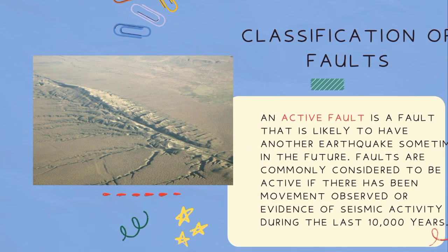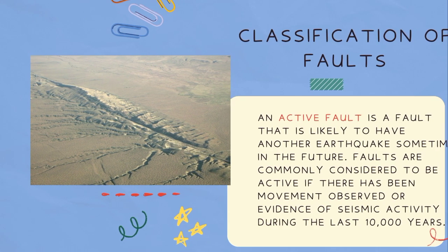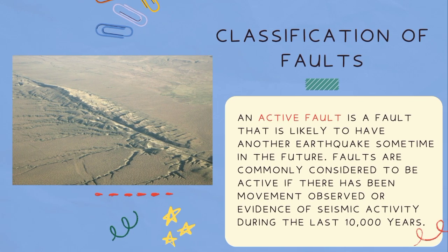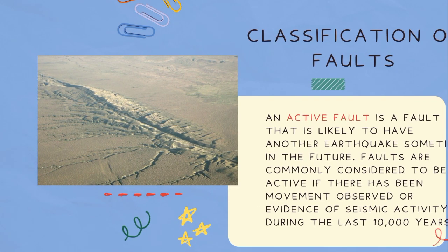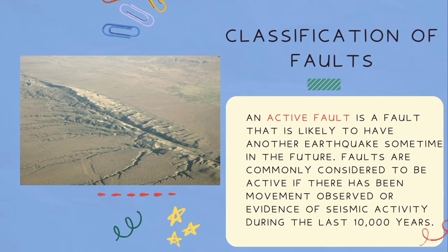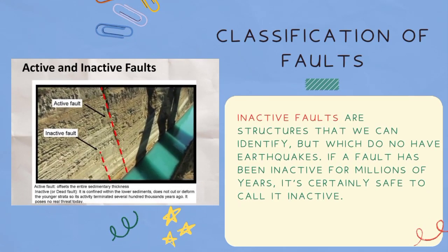Classification of Faults: An active fault is a fault that is likely to have another earthquake sometime in the future. Faults are commonly considered to be active if there has been movement observed or evidence of seismic activity during the last 10,000 years. Inactive faults are fault structures that we can identify but which do not have earthquakes. If a fault has been inactive for millions of years, it is certainly safe to call it inactive.